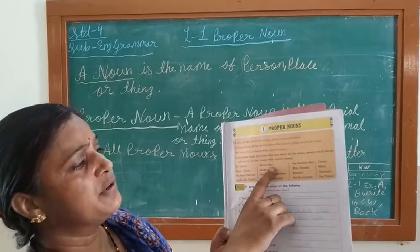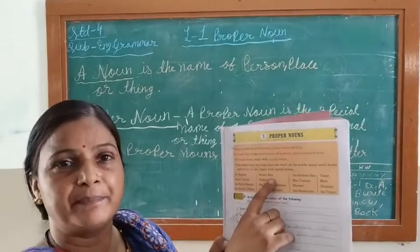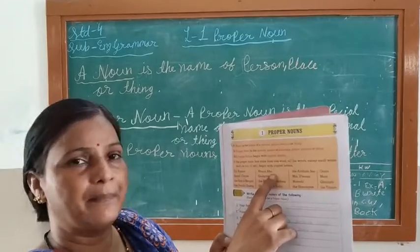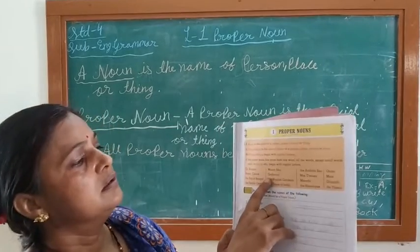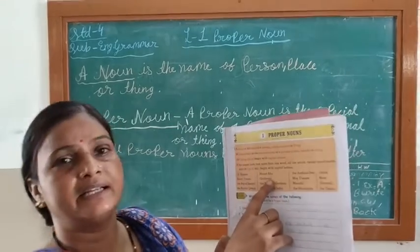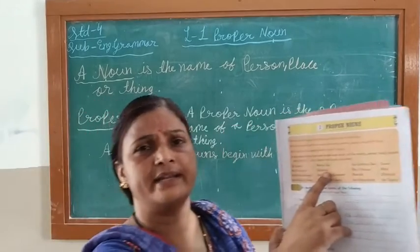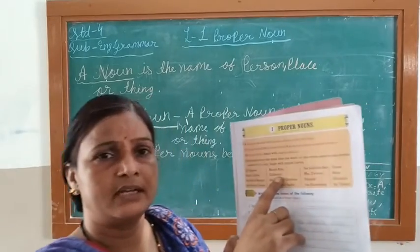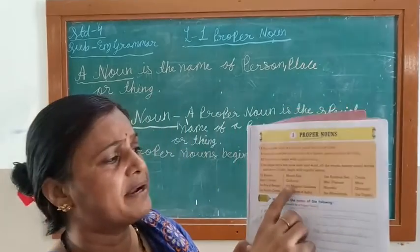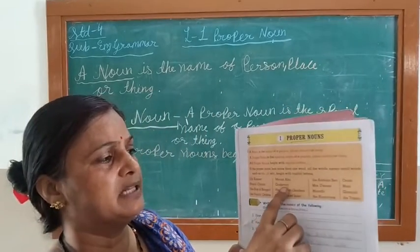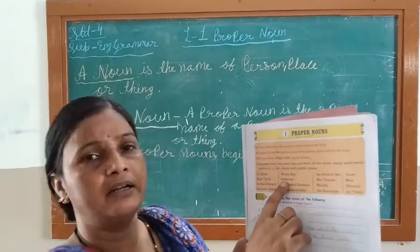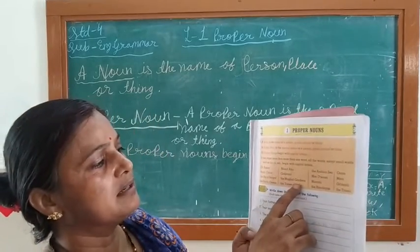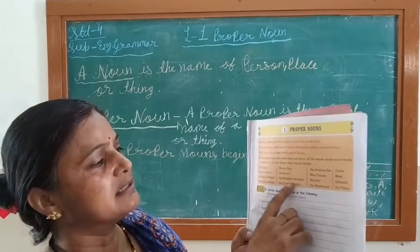Mount Abu — mountains have different names, and 'Mount Abu' is one such proper name. There are so many mountains in the universe, but the proper name here is 'Mount Abu' or 'Buddha Buri.'